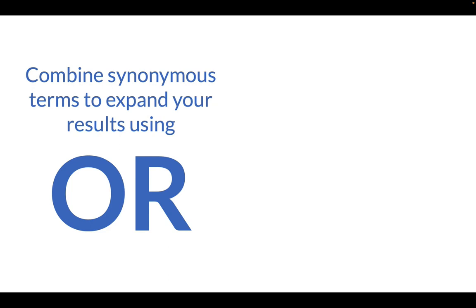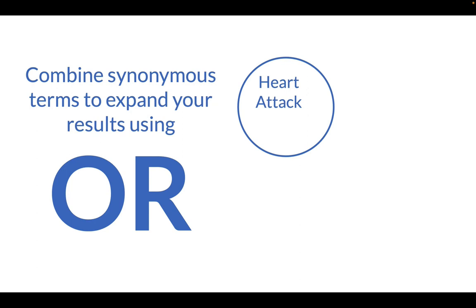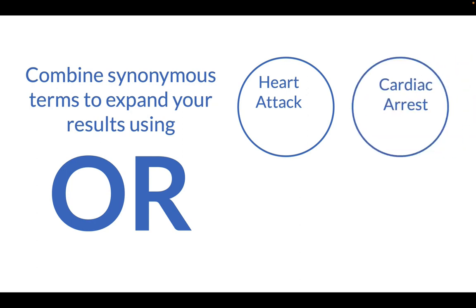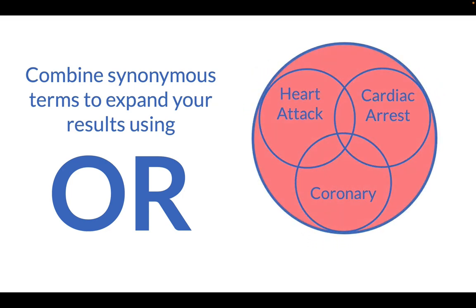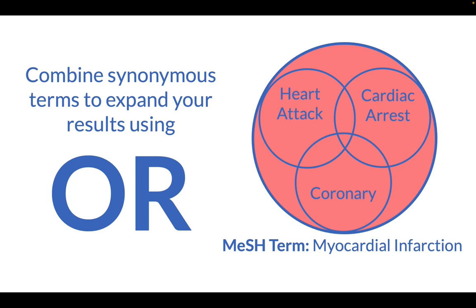In our example, one author uses the term heart attack. Another author might call the same topic a cardiac arrest, while another author might refer to coronaries. In order to retrieve all the articles around this topic, we want to use OR to expand our search to any articles with any of these terms. We'll talk about finding medical subject headings in another tutorial. In this case, for the concept of heart attacks, the heading is myocardial infarction. To get the most complete results, you need to find the subject heading and then OR it in with this pool of articles.